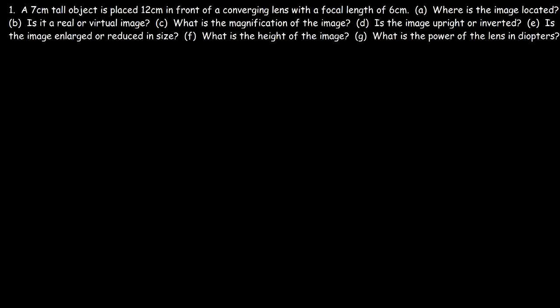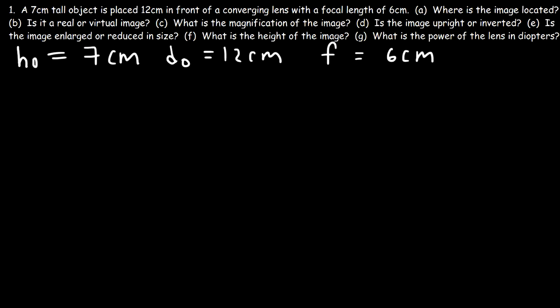A 7 centimeter tall object is placed 12 centimeters in front of a converging lens with a focal length of 6 centimeters. Where is the image located? Feel free to pause the video if you want to try this problem. The height of the object HO is 7 centimeters. The object distance DO is 12 centimeters, and the focal length of the converging lens is 6 centimeters. We need to determine DI, the distance between the image and the lens.